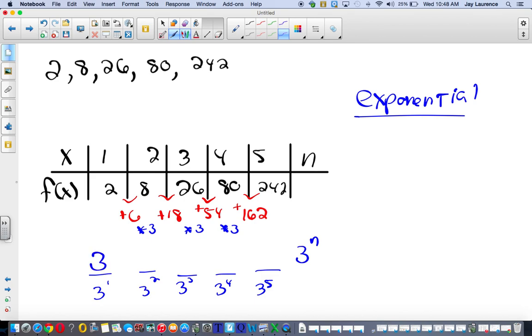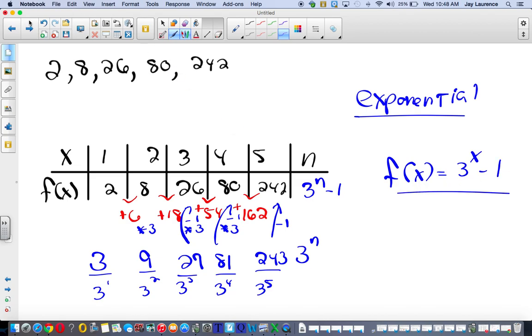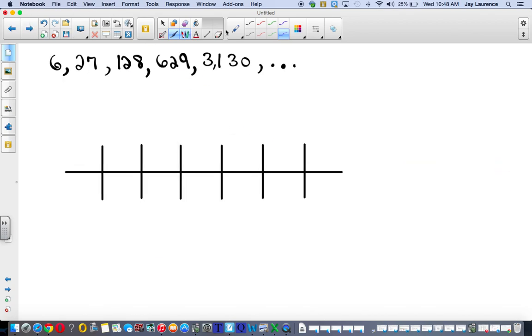And this will be 3, and this will be 9, and then 27, 81, and 243. And it looks like in each case, I'm going to take away 1. Minus 1, minus 1, minus 1. So I'll have 3 to the power n minus 1. My function f of x equals 3 to the power x minus 1. There we go. All right, two more examples here.